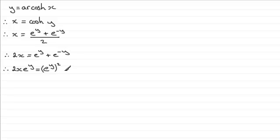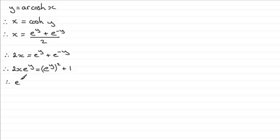And e to the minus y times e to the power y gives 1. So I've got a quadratic here, and I need to rearrange it to make it equal to 0, so we subtract 2x e to the y from both sides. We therefore have e to the power y all squared minus 2x e to the power y plus 1 equals 0.